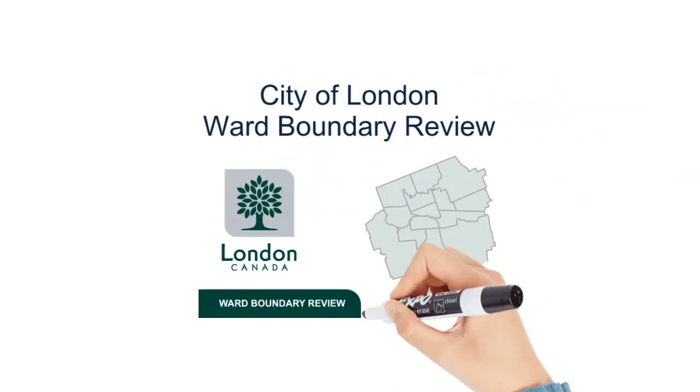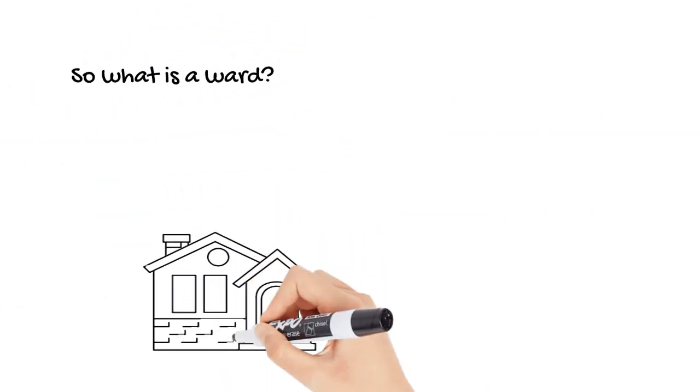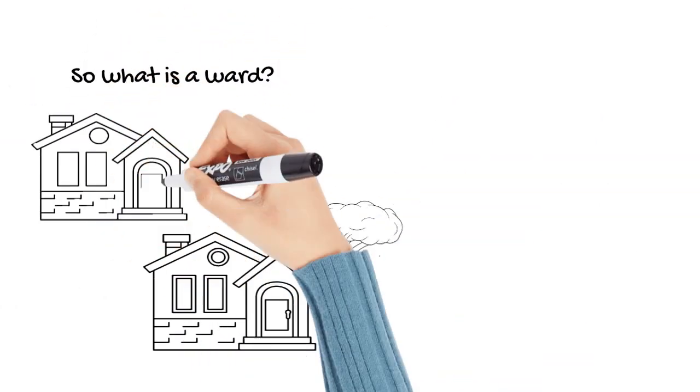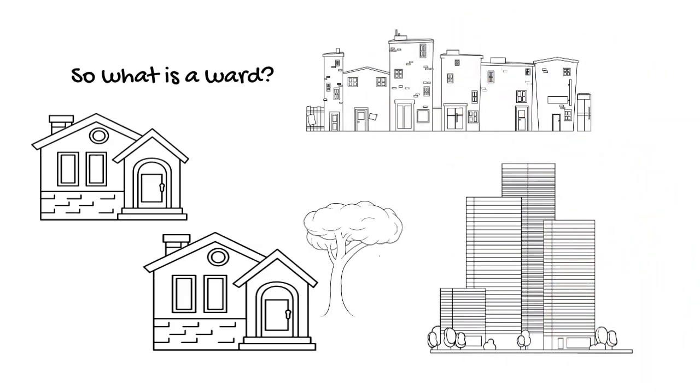I'm going to take the next few minutes to talk with you about our ward boundary review. So first off, what is a ward? Well, it's my home, it's your home, it's our neighborhood. A ward is a part of London where people vote for their representative on city council.